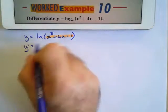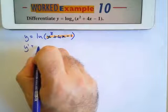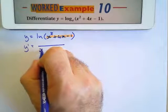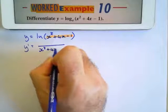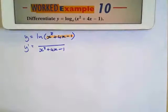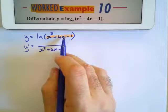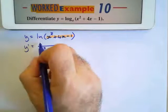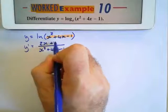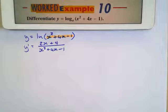The derivative of the natural log of something is 1 over that something, x squared plus 4x minus 1, and I'm going to multiply by the derivative of that something. The derivative of x squared is 2x plus 4.